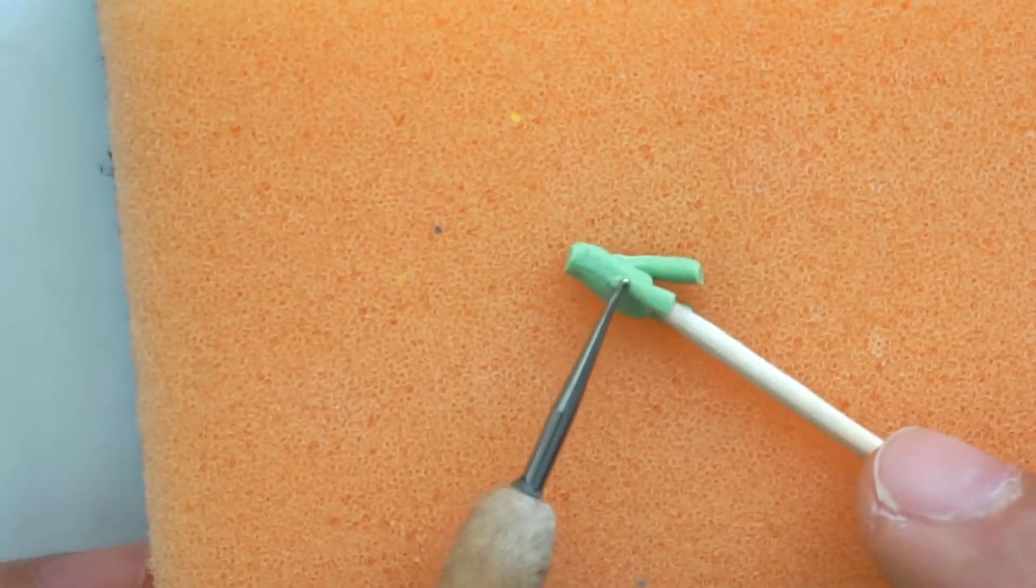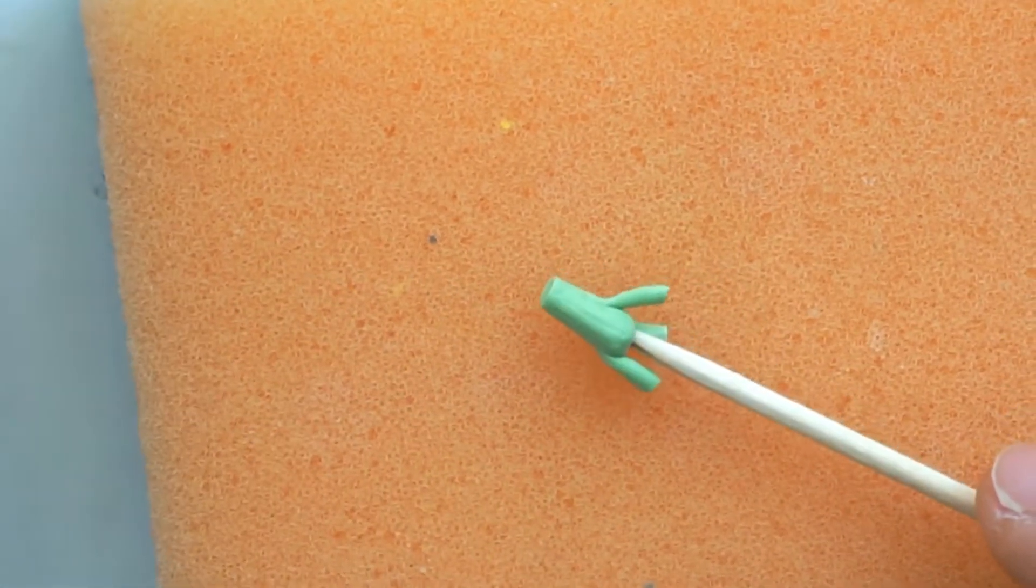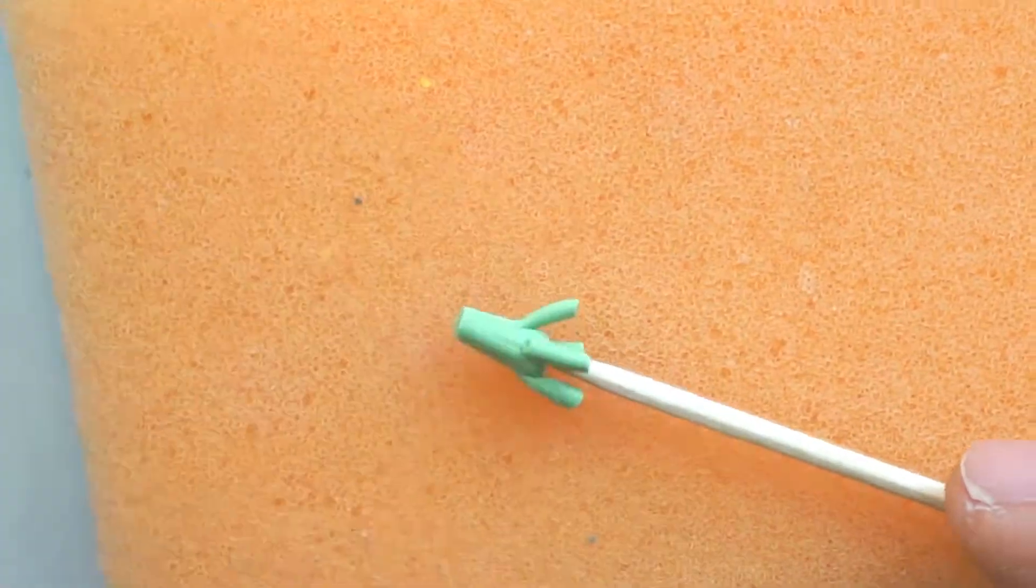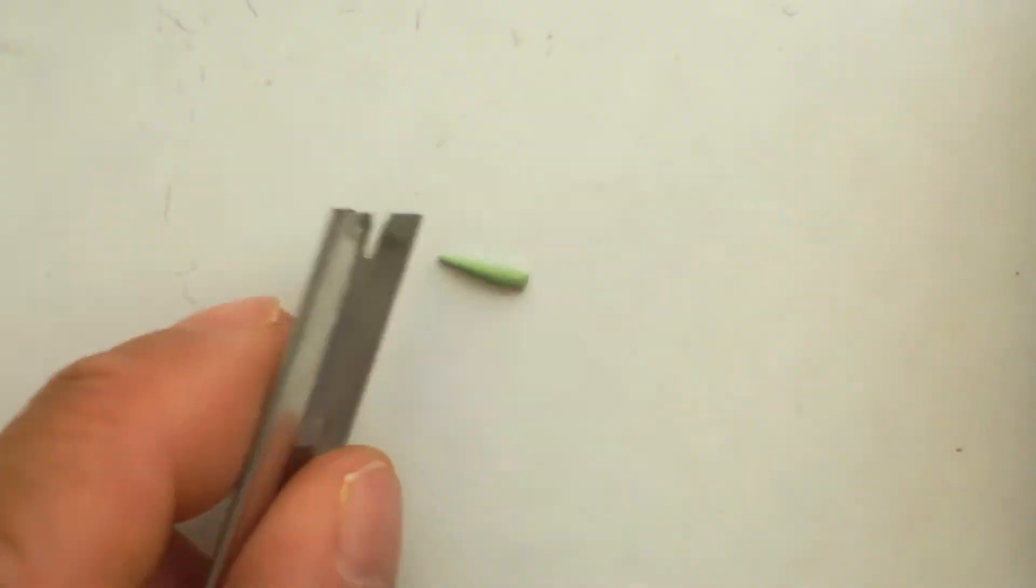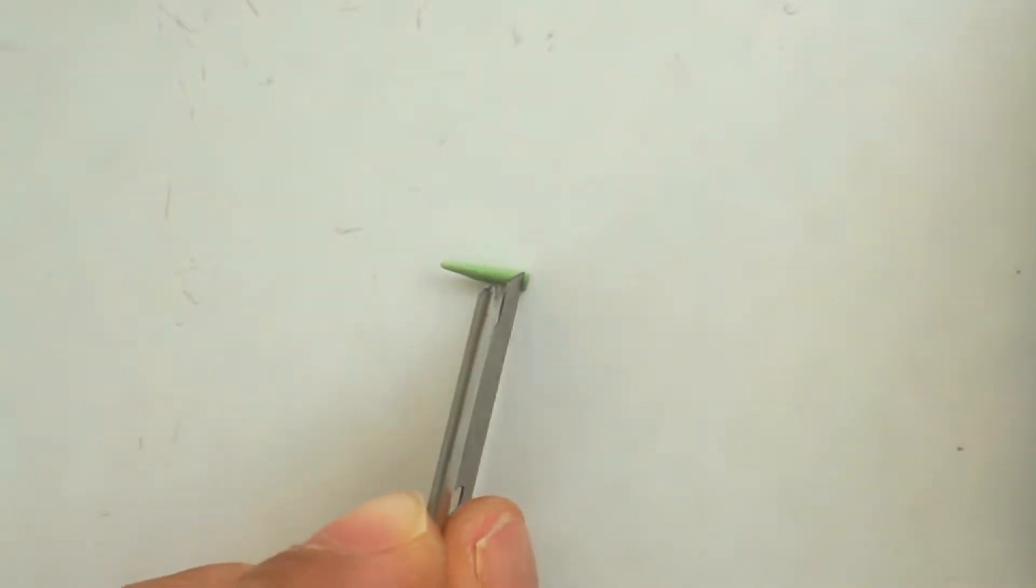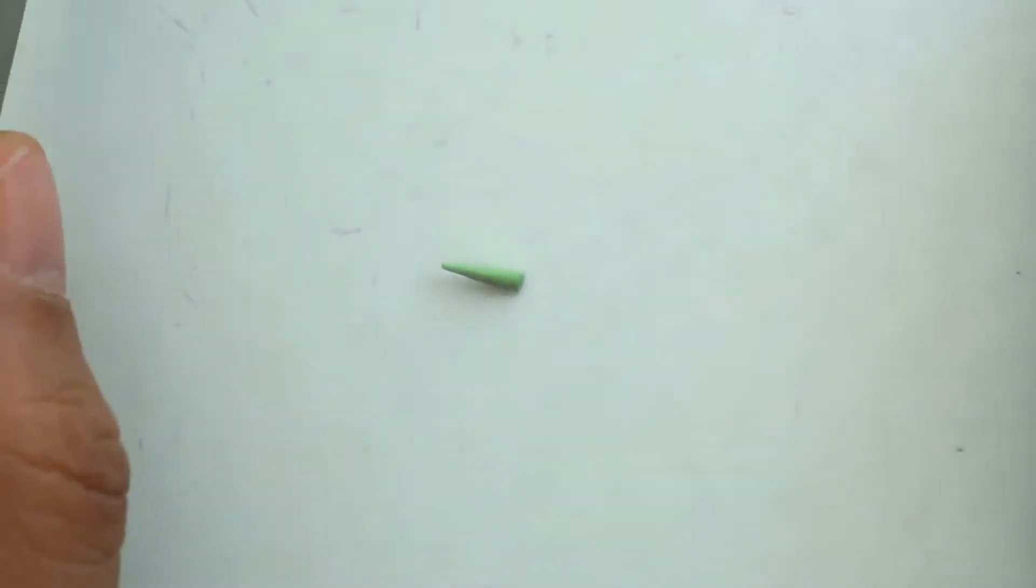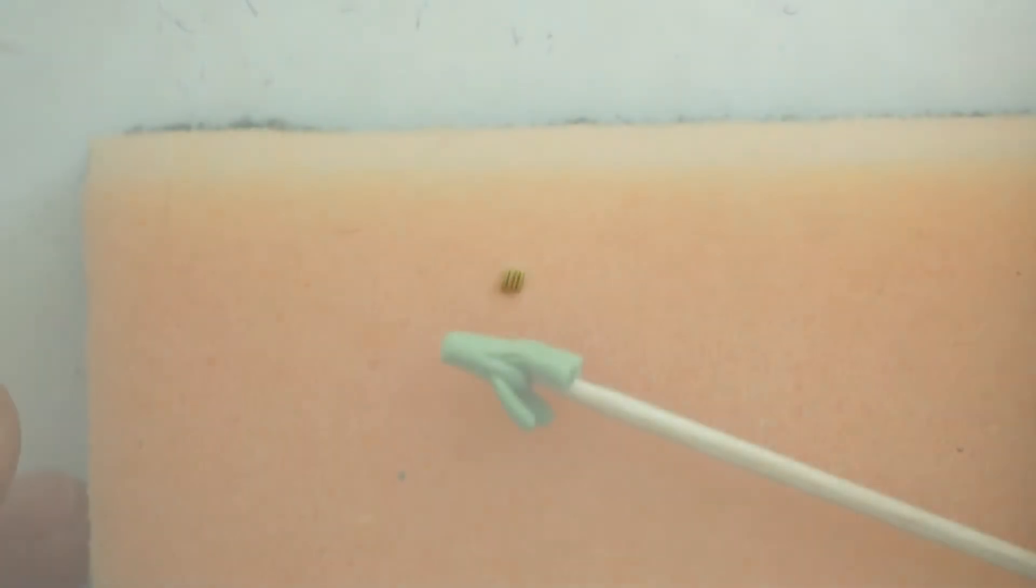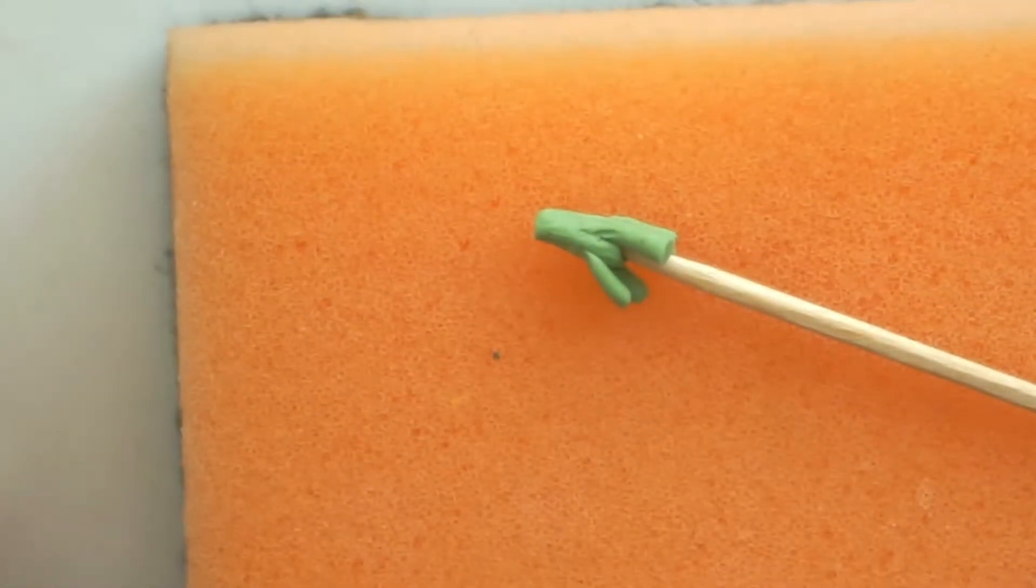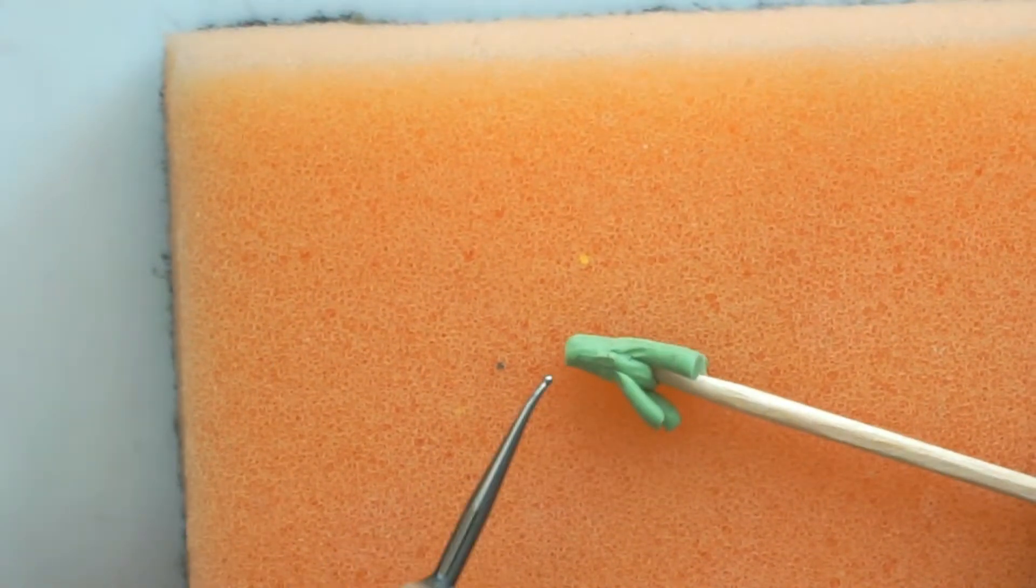Next, roll another light green clay to a very thin snake and slice the clay thinly. We are going to use these thin slices to decorate the stock. Attach the thin slices on the side of the stock. After that, pre-bake and let it cool.